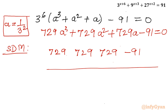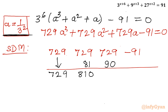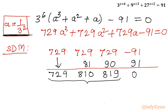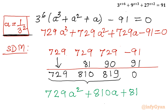I will take the leading term as it is: 729. Multiplying 729 by 1/9 gives 81; addition gives 810. Multiplying 810 by 1/9 gives 90, and 729 + 90 = 819. Multiplying 819 by 1/9 gives 91, and −91 + 91 = 0. So the remaining quadratic equation in a is: 729a^2 + 810a + 819 = 0.